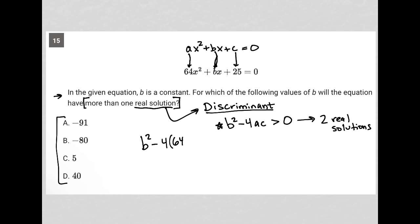So negative 4 times a, 64 times c, 25. And again, I want that to be greater than zero in order for me to have more than one real solution.